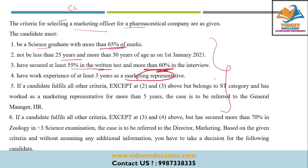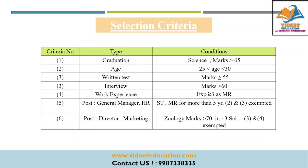Apart from this, if there are category candidates such as an ST candidate, certain criteria can be exempted. They have also given conditions for the general manager as well as the director's post. Based on these different criteria, they have asked certain questions — they have given candidate profiles and you need to choose whether that person will be selected or not. Let's first check what the selection criteria are.